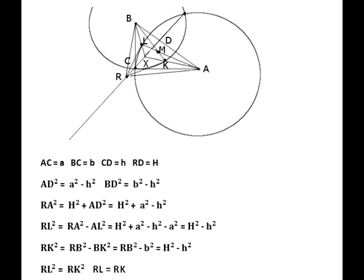We'll apply Pythagorean theorem to three pairs of right triangles. First ACD and BCD, then ARD and BRD, and then RLA and RKB. Several algebraic equalities shown on this diagram prove that indeed the lengths of two segments RL and RK are equal.